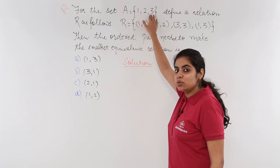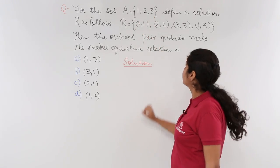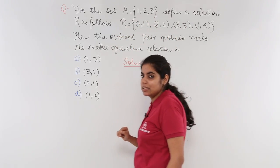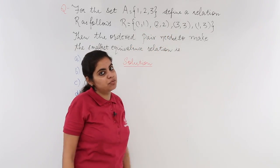For the set A is equal to 1, 2, 3, I mean I have a set been given with 3 elements 1, 2, 3. Define a relation R as follows. What is R? Let's see. The relation R is given to me as (1,1), (2,2), (3,3), and (1,3).